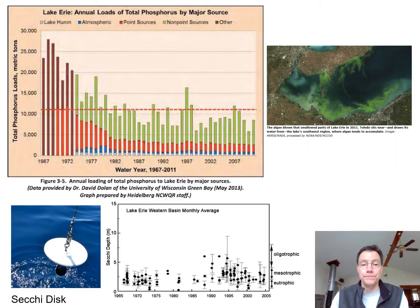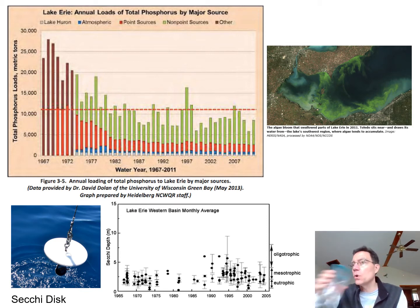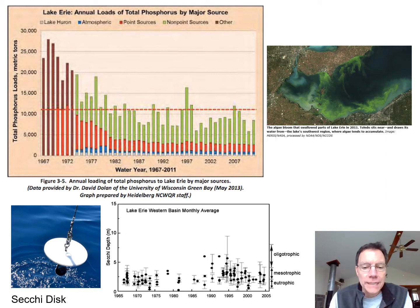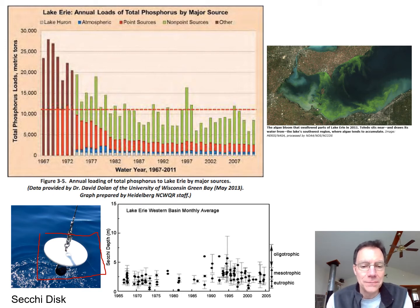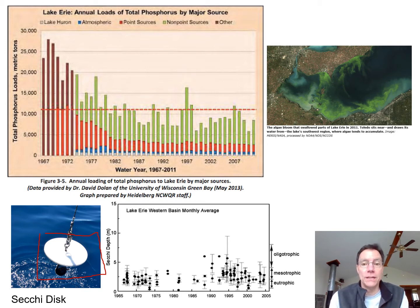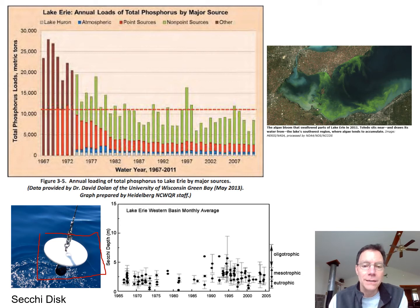Here's some data showing a couple of things. One is the Secchi depth — a very inexpensive way to measure how well light can penetrate into a lake. A Secchi disc is just a small plastic or metal disc that you lower over the side of a boat and watch until you can't see it anymore, then record the depth. A large Secchi depth means the water is very clear. A shallow Secchi depth means the water is turbid, cloudy, or loaded with algae.